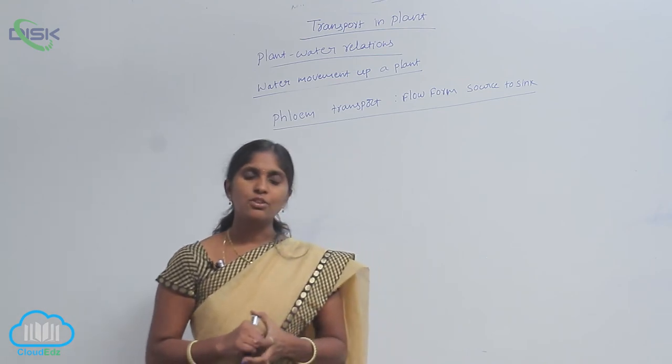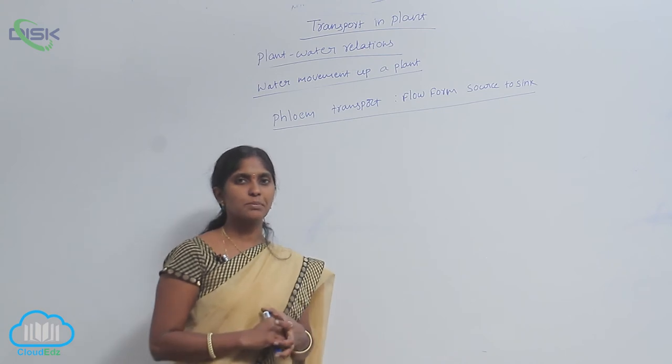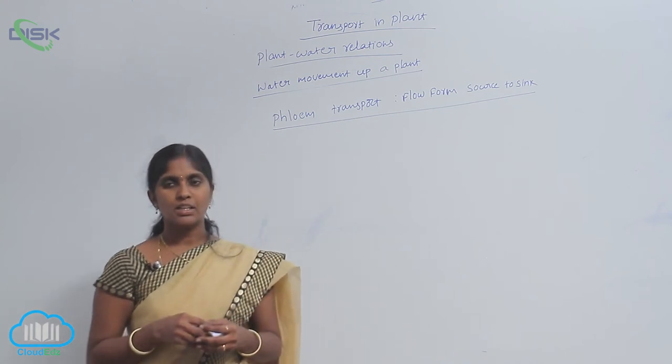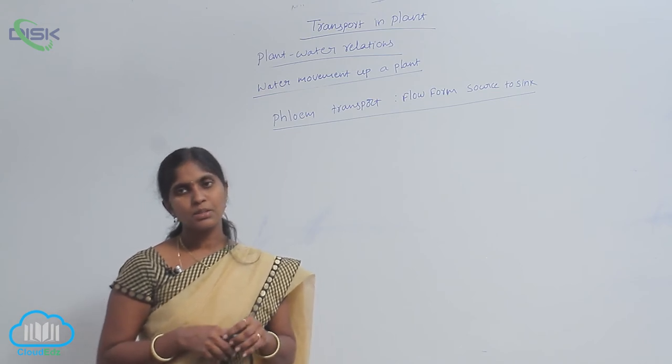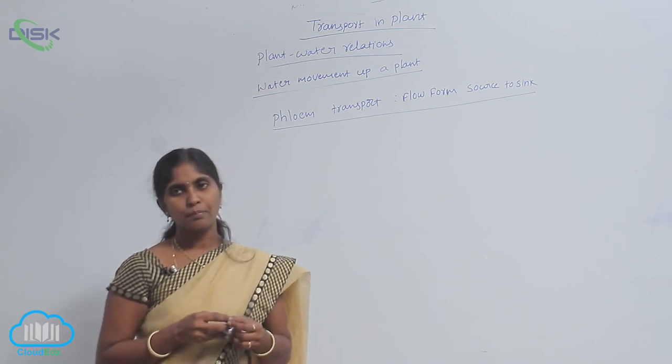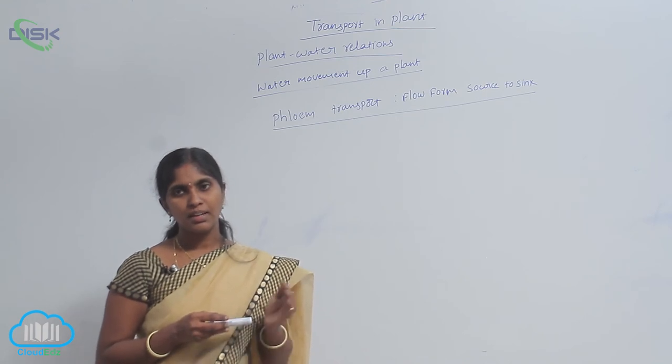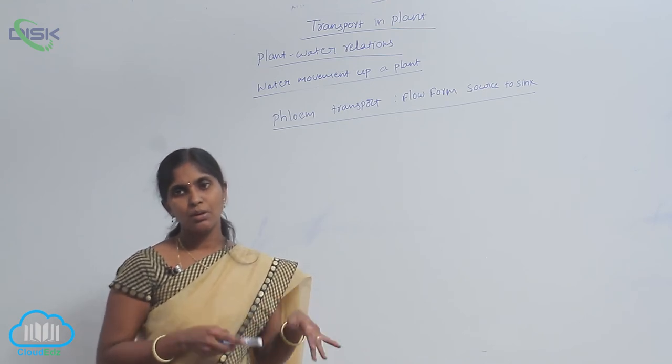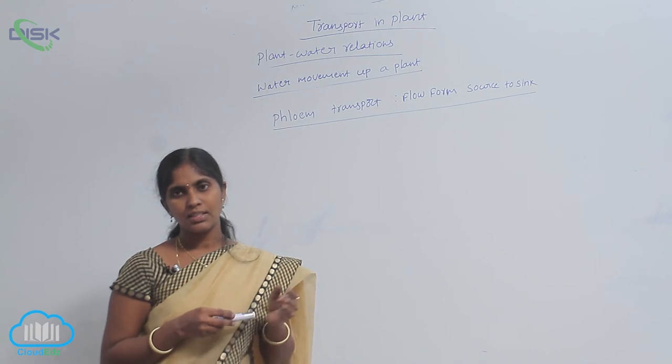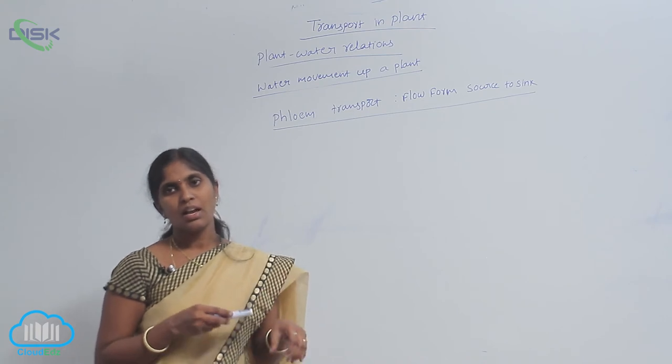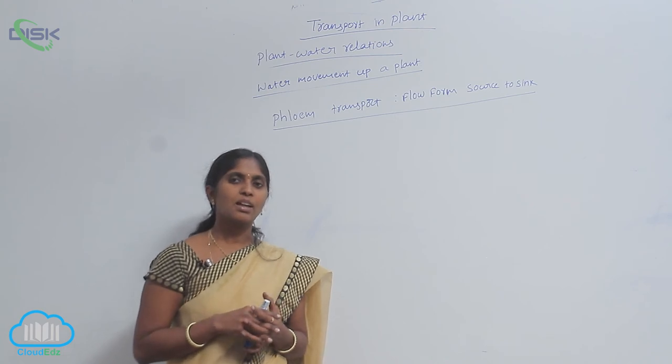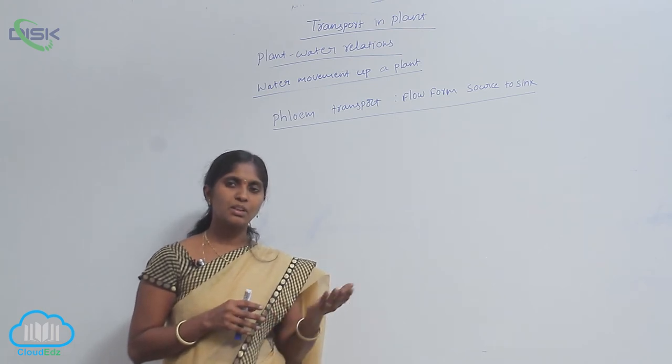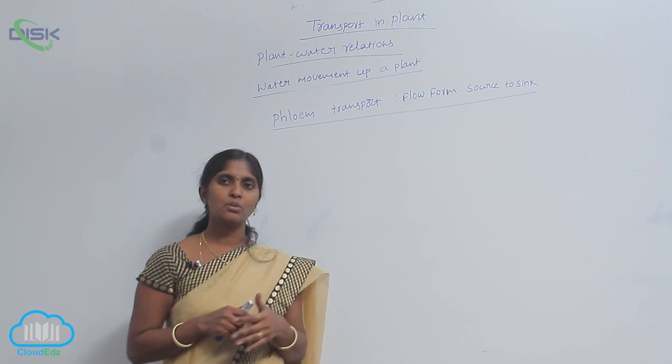At the sieve tube cells, the sucrose is mixed with water to produce the sucrose sap. When the sucrose sap is present in the phloem, beside that the xylem is also present. The xylem has the water and phloem has the sucrose sap. The sucrose sap is highly concentrated compared with the water which is flowing in the xylem.